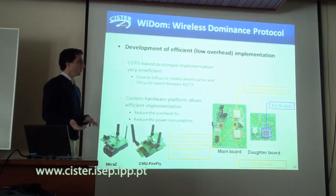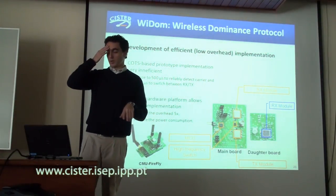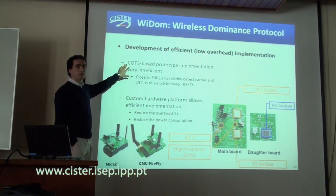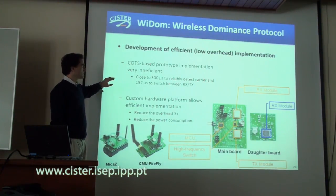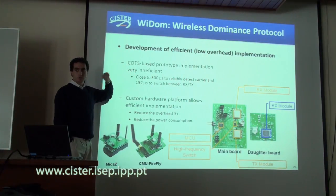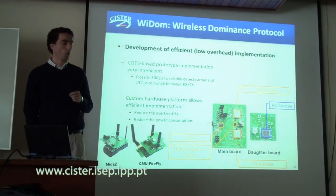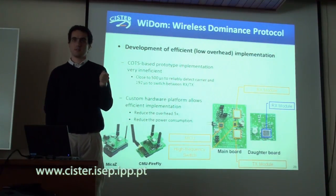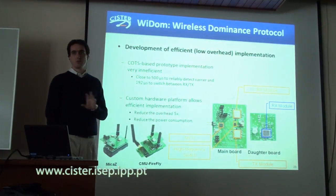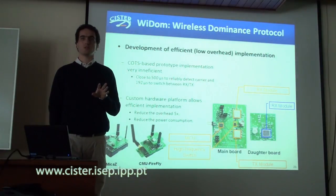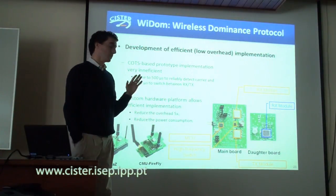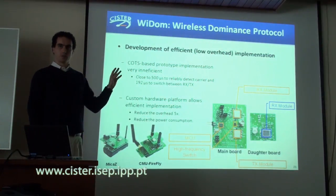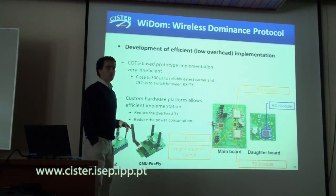The other topic about the MAC protocol development was the development of a low-overhead implementation. In our first prototype, we had a COTS-based implementation using transceivers in normal modes. From experiments, to reliably detect both dominant and recessive bits we needed 500 microseconds, and not with a very long range, using the default threshold of the radio. We could lower it, but anyway, we needed about 500 microseconds to have reliable detection.